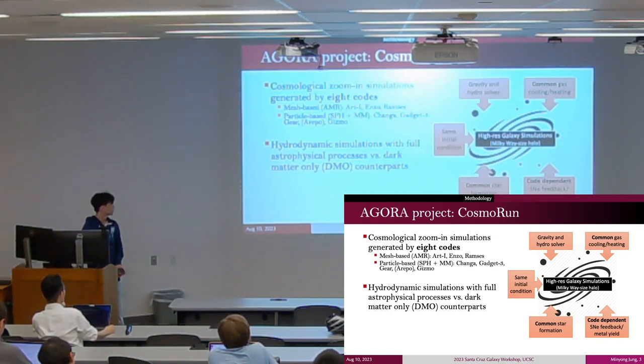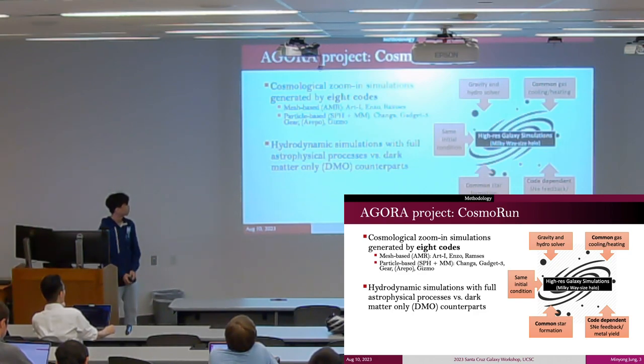The AGORA project is a code comparison project aimed at boosting the predictive power of numerical simulations. We use CosmoRun, a suite of zoom-in simulations generated by eight different codes. We classify these into mesh-based and particle-based codes, and please note that the result in ART code is not included in this talk.